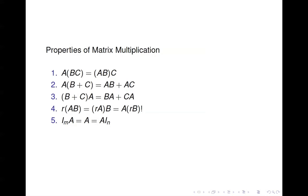Some properties of matrix multiplication: the associative property — you can move the parentheses around, but the order the matrices appear is unchanged. You can distribute either from the left or from the right. You can move a scalar wherever you'd like. And any matrix multiplied by the identity is just itself — note that if A is M by N, multiplying on the left requires the M by M identity, and multiplying on the right requires the N by N identity.